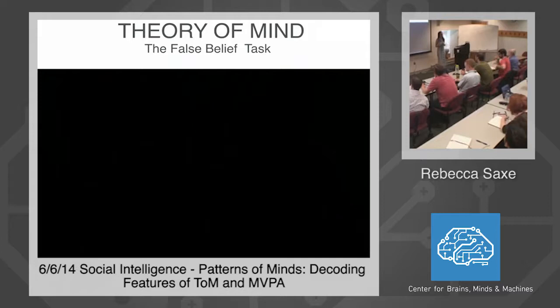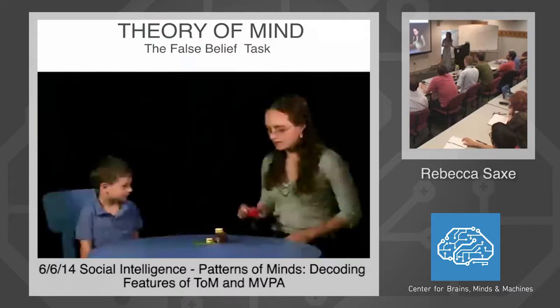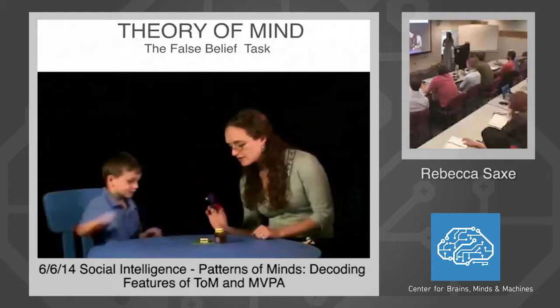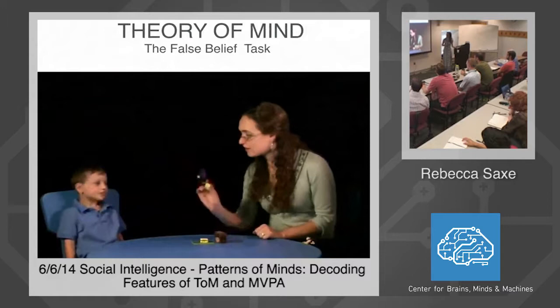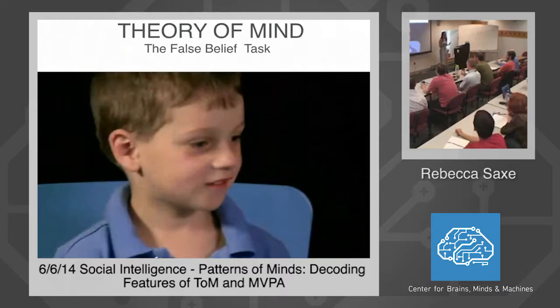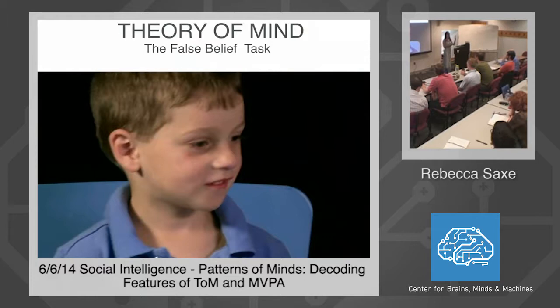Part of why it became so famous is the discovery that while five-year-olds can do this task, three-year-olds look really different. Here's a three-year-old at the very end of the same story — that's called failing the false belief test. One element is that when Ivan said 'I want my cheese sandwich' and I asked which one he's going to take, the child predicts he will take his cheese sandwich, not taking into consideration his false belief about which one is his.